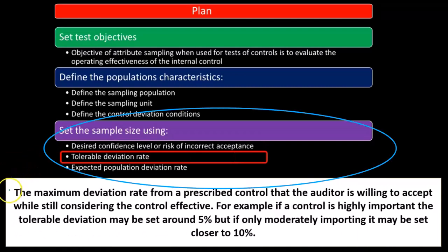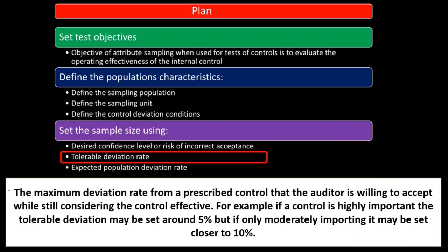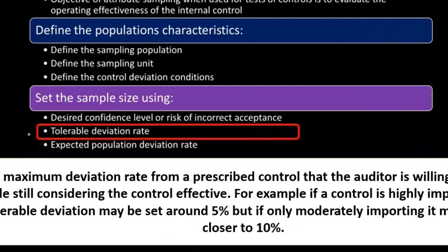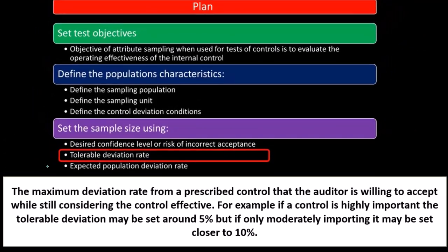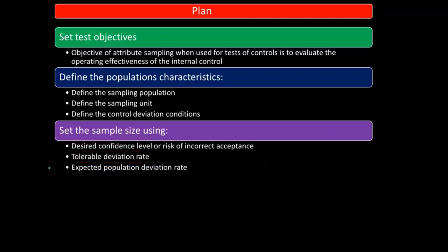The tolerable deviation rate is the maximum deviation rate from a prescribed control that the auditor is willing to accept while still considering the control effective. For example, if a control is highly important, the tolerable deviation may be set to 5%, but if it's only moderately important, it may be set to 10%. We accept these deviations and still conclude that the control is effective.